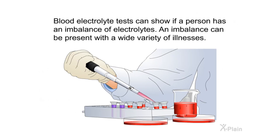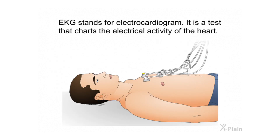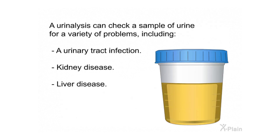Blood electrolyte tests can show if a person has an imbalance of electrolytes, which can be present with a wide variety of illnesses. A chest X-ray may be done if your health care provider thinks you may have an underlying health condition affecting the lungs or heart, such as pneumonia. An EKG, or electrocardiogram, is a test that charts the electrical activity of the heart. A urinalysis can check a sample of urine for problems including urinary tract infection, kidney disease, or liver disease.